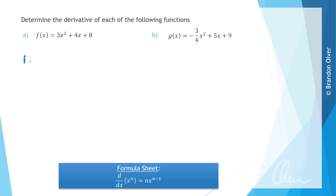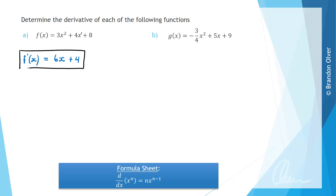For part A, the derivative f'(x) is simply going to equal: we take the 2 in the power and multiply it out the front, so 2 times 3 gives 6, and then we subtract 1 from the power, giving us 6x. Then for 4x, which is technically to the power of 1, multiplying by the power gives 1 times 4 equals 4, and x to the power of 0 is 1, so 4x derives to just 4. Any constants, like plus 8, go to 0 when we differentiate. That is the derivative for part A.